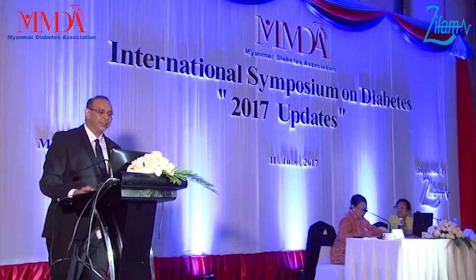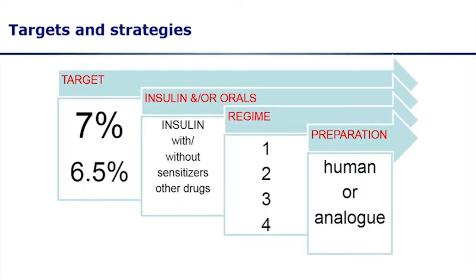The first step is to define the target. In diabetes care, our target is HbA1c of 7 without causing hypoglycemia and without causing complications. Once we have decided our target in a particular patient, then we decide our strategy.